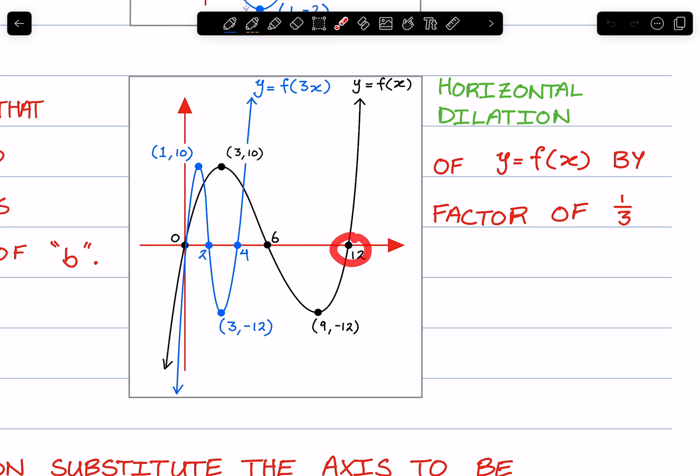And this distance of 12 multiplied by a third, we get 4. And this point here, its x distance is 9 multiplied by a third, we get 3.